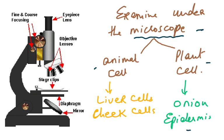This is a light microscope. You have an eyepiece lens, an objective lens — you must know these names — stage clips by which you hold the slide, a diaphragm and a mirror. Some models have an electric connection with a bulb instead of a mirror. You also have the fine and coarse focusing knobs. You must look up how to use a microscope — you can find videos on YouTube.